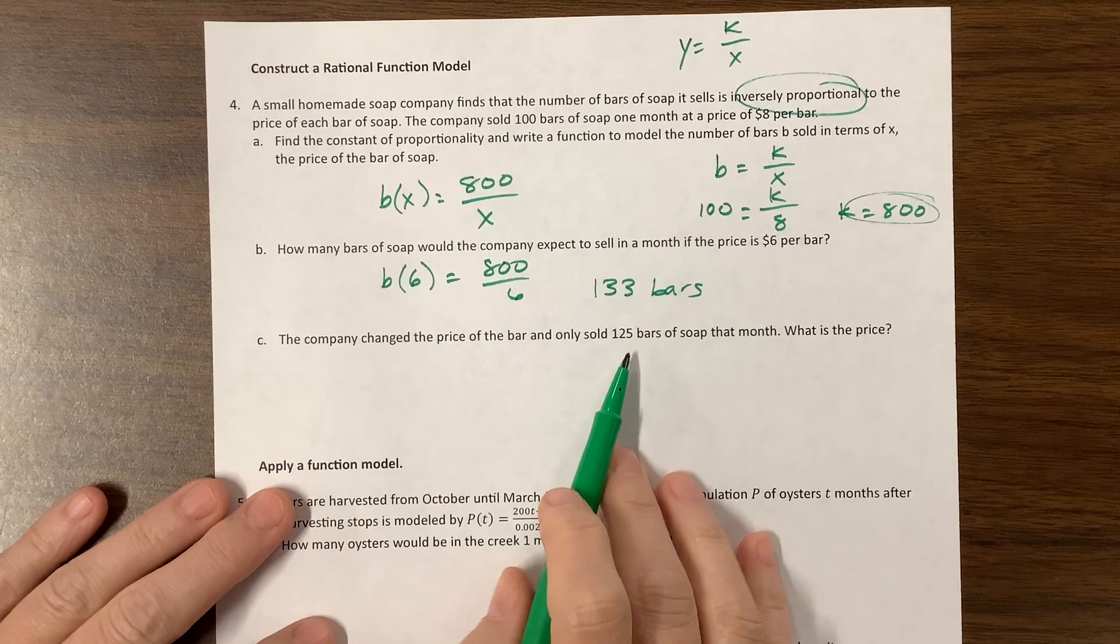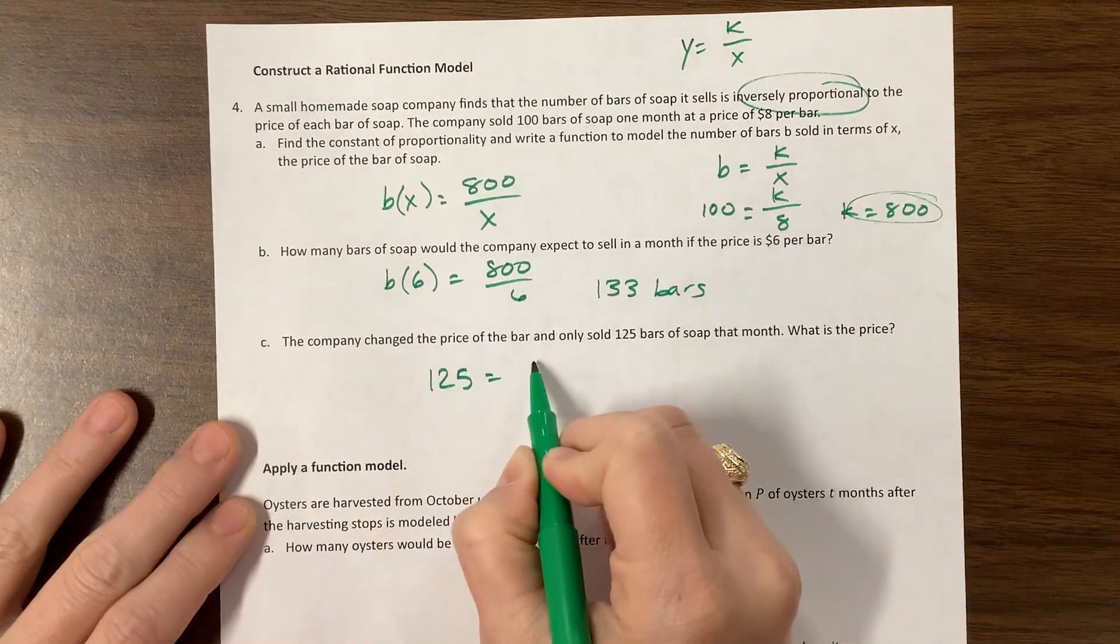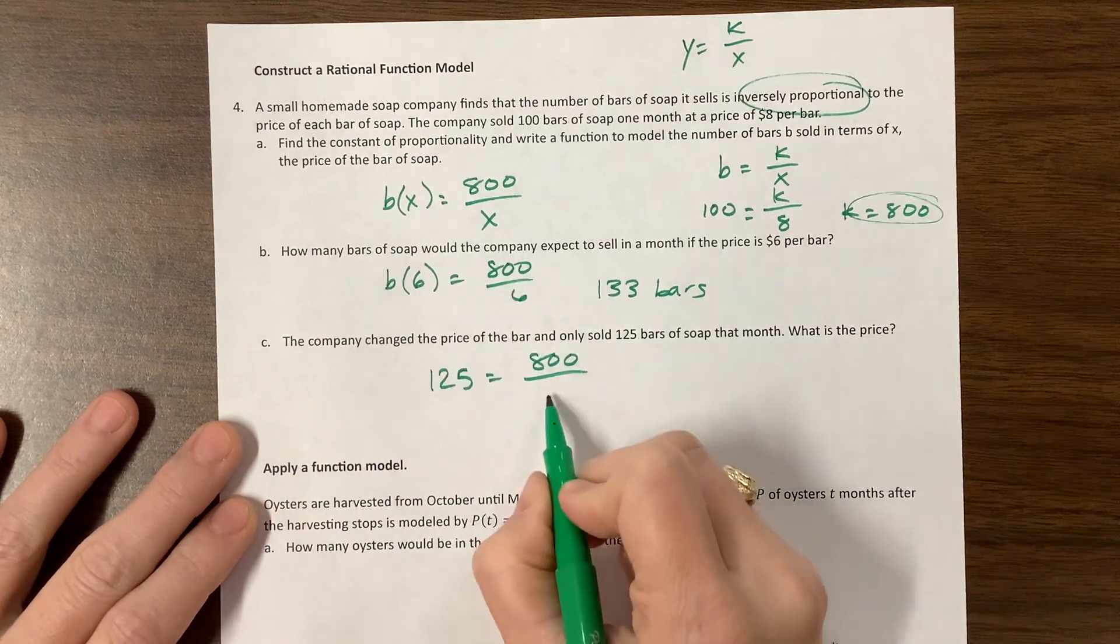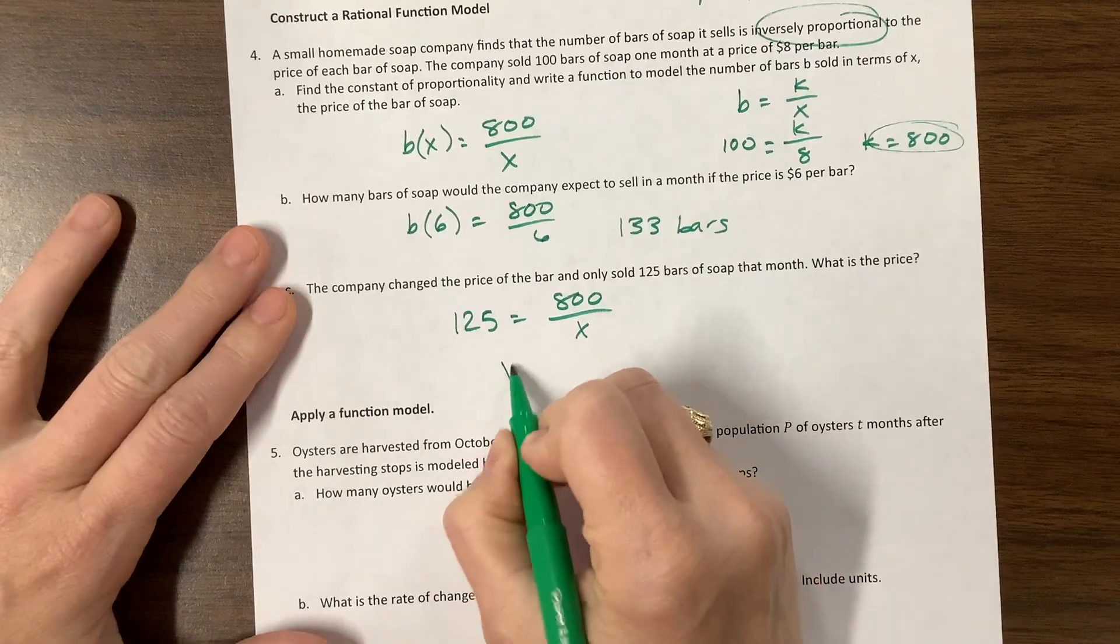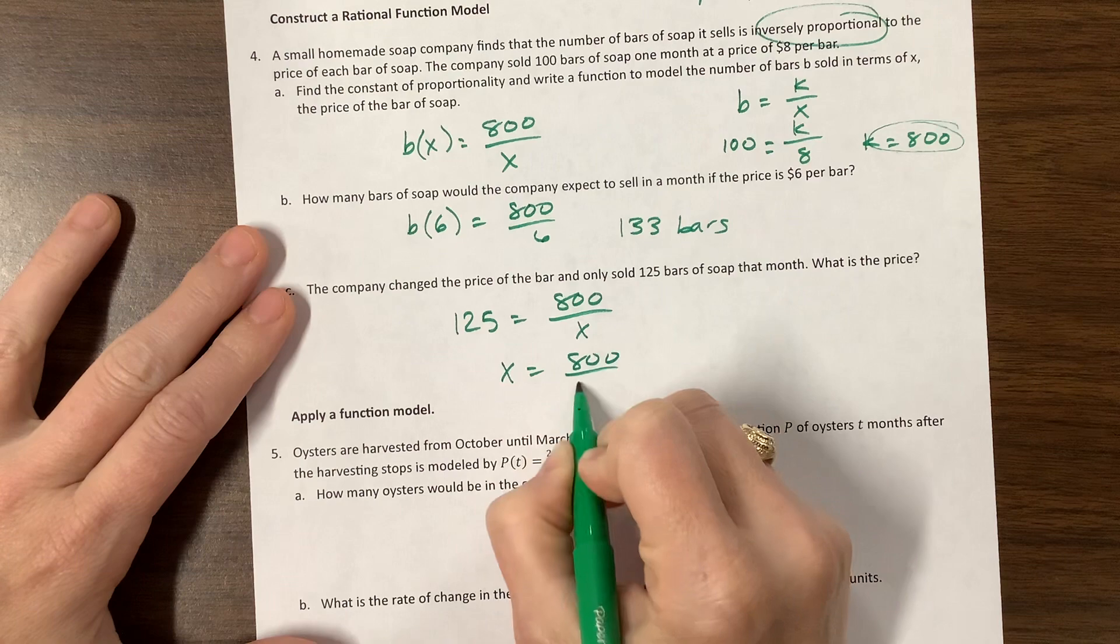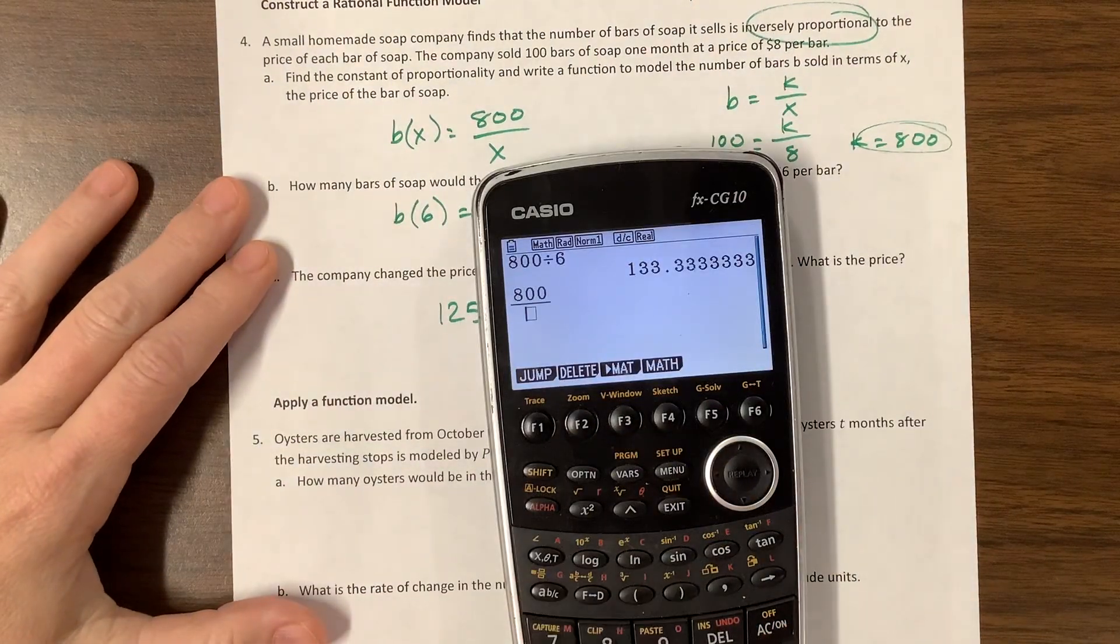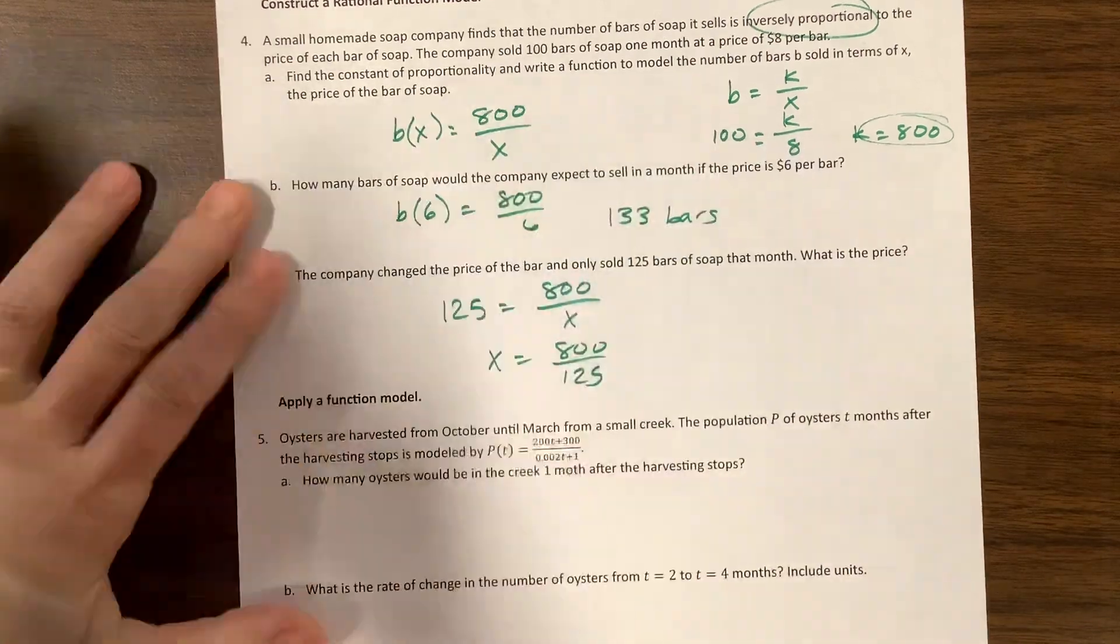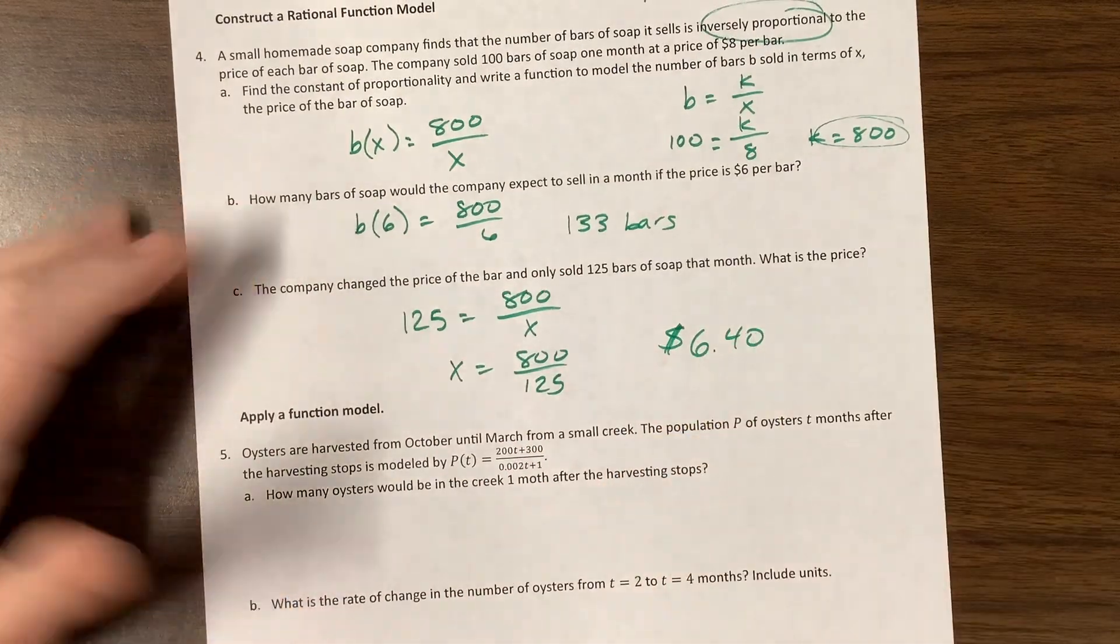Then it says the company changed the price and only sold 125 bars. So this time we don't know the price, but we know the, basically we don't know the x value, we know the y value. Okay, so here we go. If I multiply and then divide, I have x is equal to 800 over 125. 800 over 125. Oh, they reduced it for me. That's lovely. 6.4. So what does that mean? That means they're charging $6.40. So if it's money, write it in terms of money.